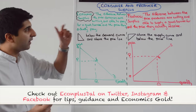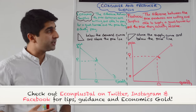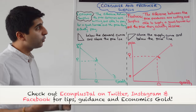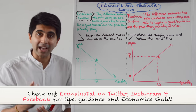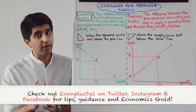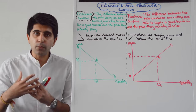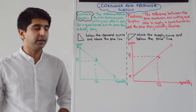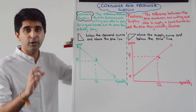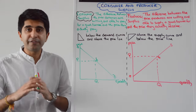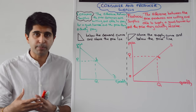Let's start with consumer surplus. Consumer surplus is the difference between the price consumers are willing and able to pay for a good or service and the price that they actually pay. That's a very important definition to know. Consumer surplus is normally a triangle shape, found below the demand curve and above the price line.